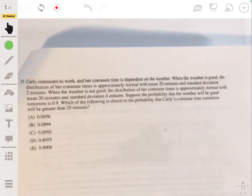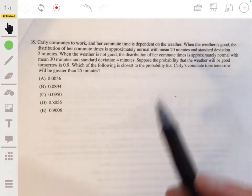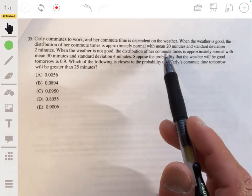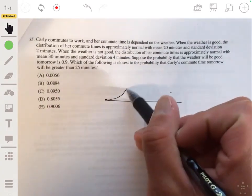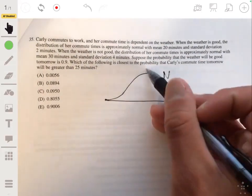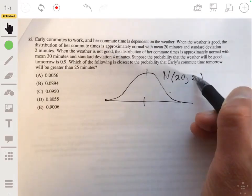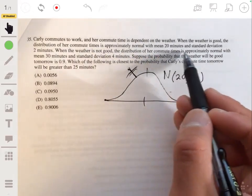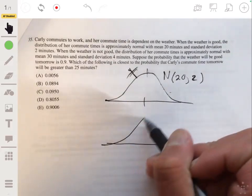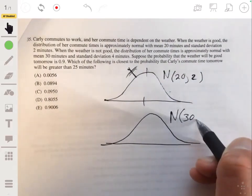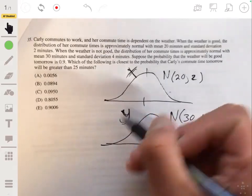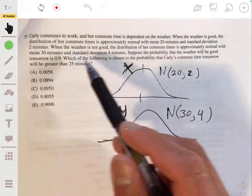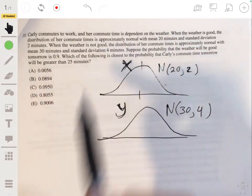And 35, Carly commutes to work and her commute time is dependent on the weather. When the weather is good, the distribution of commute times is approximately normal with mean 20 minutes and standard deviation two minutes. Let's draw that. When the weather is not good, the distribution of the commute times is approximately normal with mean 30 minutes and standard deviation four. Suppose the probability that the weather will be good tomorrow is 0.9. Which of the following is closest to the probability that Carly's commute time tomorrow will be greater than 25 minutes.